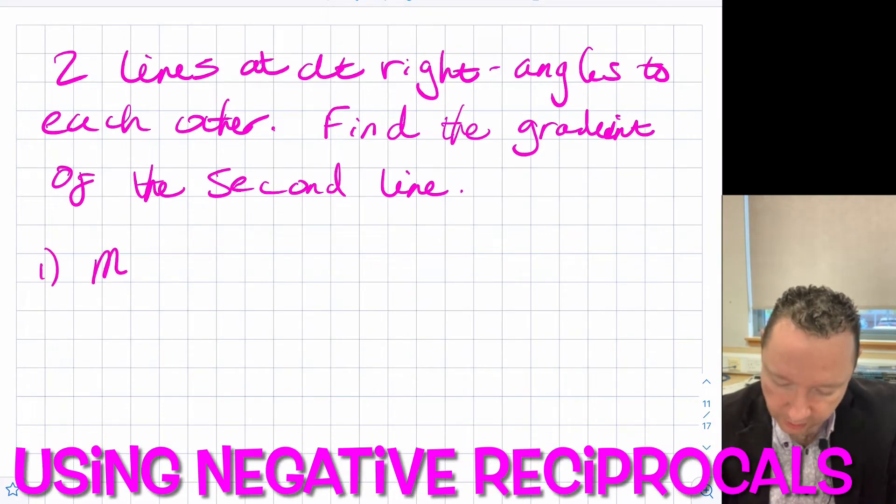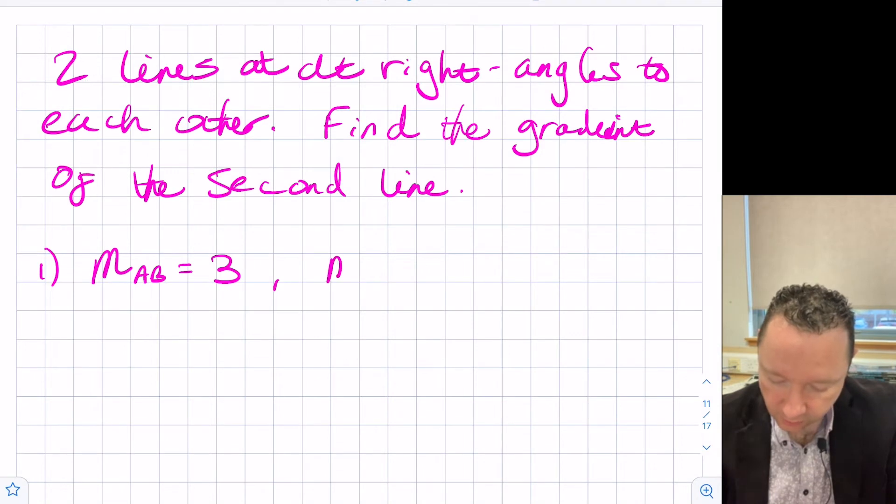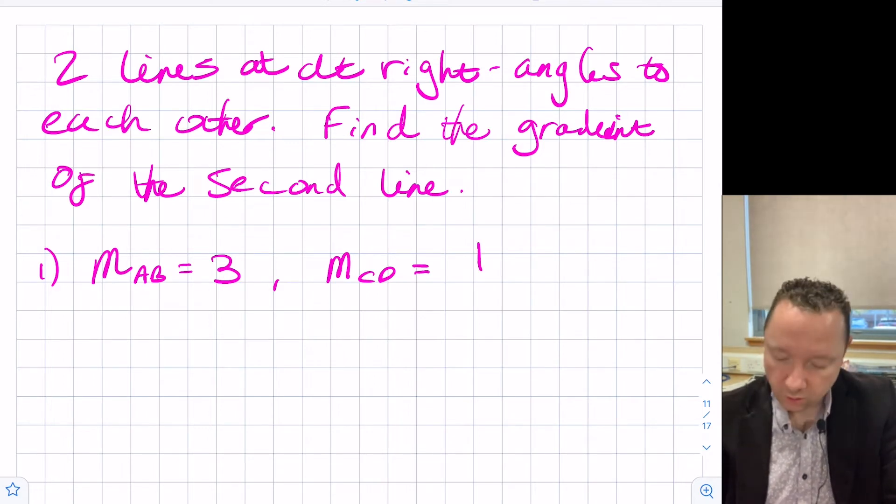So let's say example one. If the gradient of the first line, let's call it AB, is equal to three, how do I know the gradient of CD at right angles to that? Well, we say it's a negative reciprocal. All you have to do, three becomes a third and minus. Minus a third. If you times them together, you get minus one.